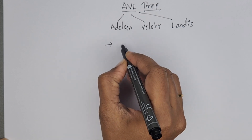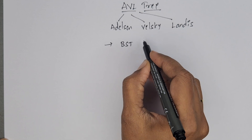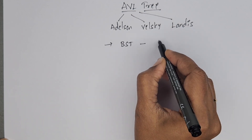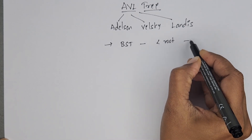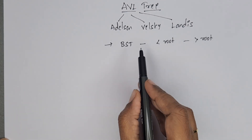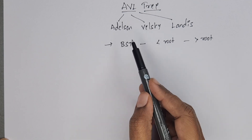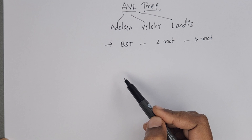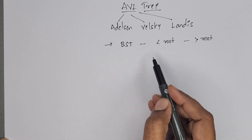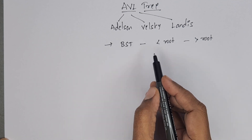AVL tree is also a binary search tree. Binary search tree means all left subtree elements are less than root and right subtree elements are greater than root. In the previous video I have explained about binary search tree. AVL tree is also a binary search tree, and in binary search tree the disadvantage is in worst case the time complexity is more — O(n).